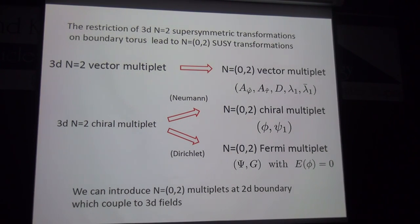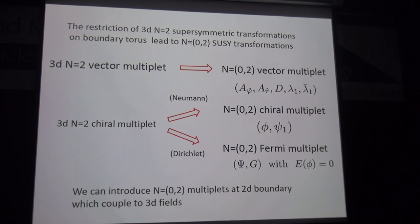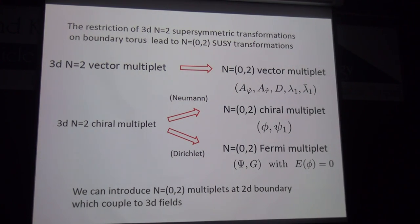With these boundary conditions, the restriction of the three-dimensional supersymmetric transformation to the boundary gives a two-dimensional (0,2) supersymmetric transformation. More precisely, the three-dimensional N=2 vector multiplet leads to a two-dimensional (0,2) vector multiplet at the boundary. With the Neumann boundary condition, the chiral multiplet leads to a boundary (0,2) chiral multiplet. With the Dirichlet boundary condition, we can also introduce additional two-dimensional (0,2) multiplets at the boundary which couple to the three-dimensional bulk.